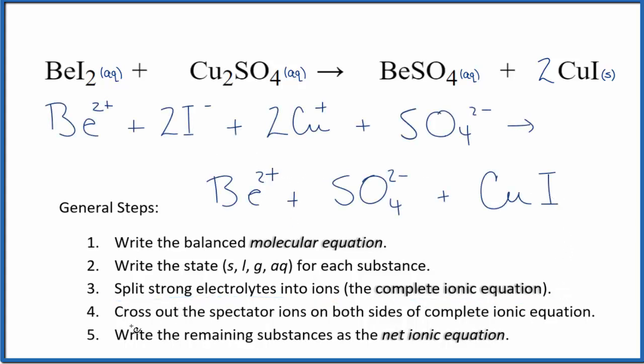At this point, we can cross out the spectator ions. They're on both sides. And note, with net ionic equations, we don't split solids apart. So this CuI right here, these two CuIs, we didn't split those apart. So we're just going to leave those as is in our net ionic equation.